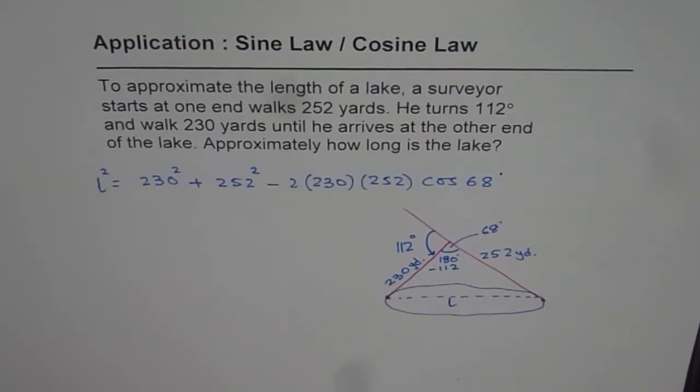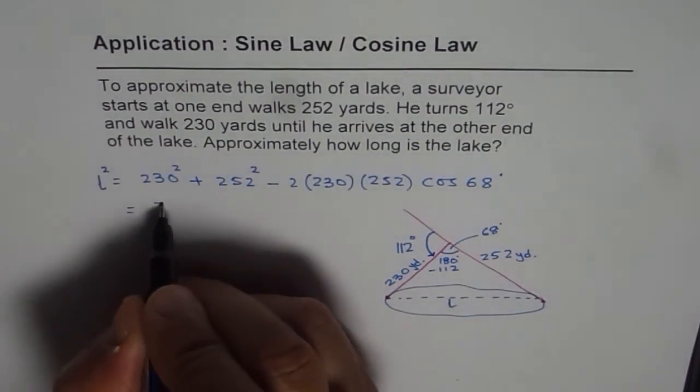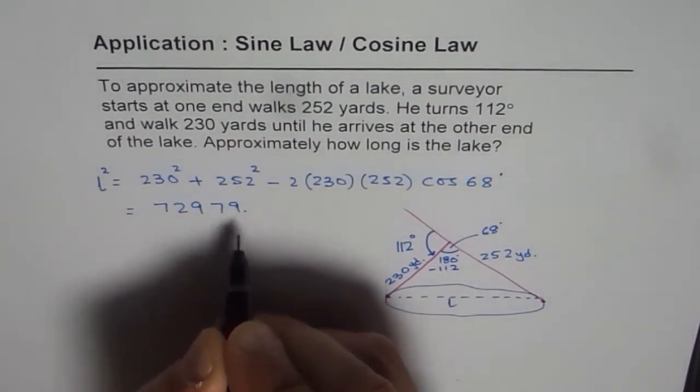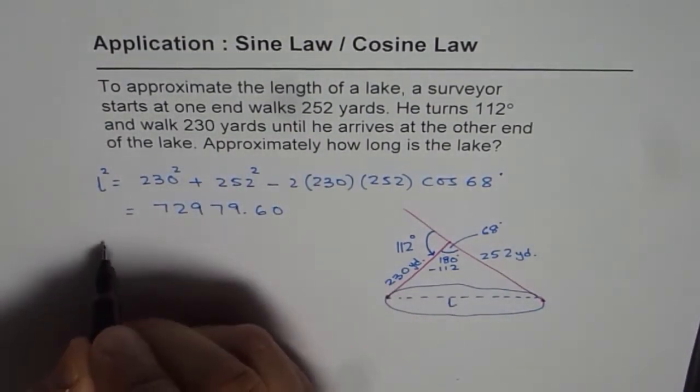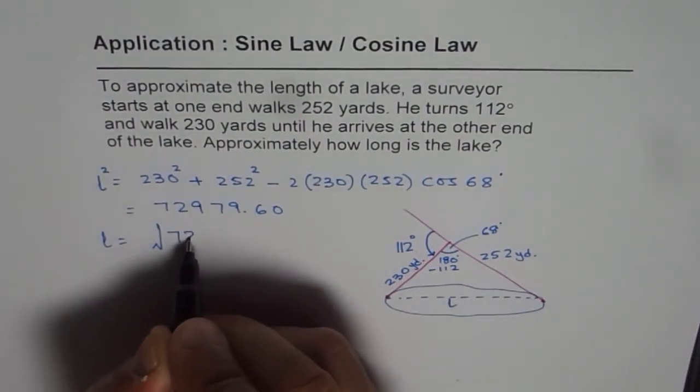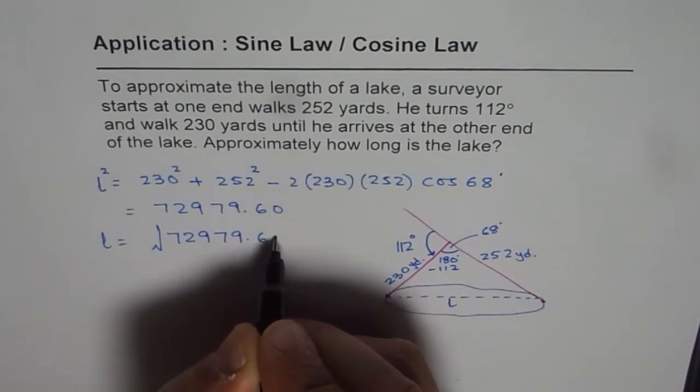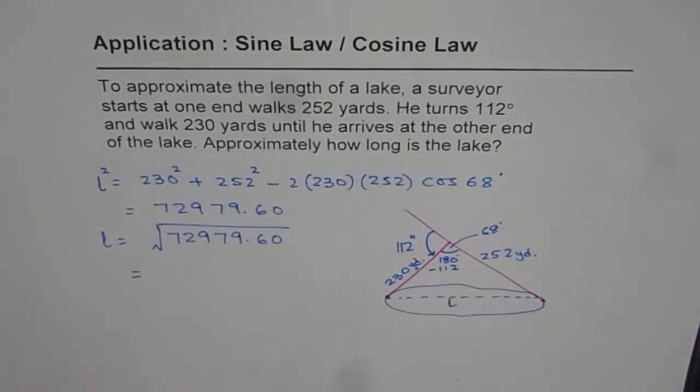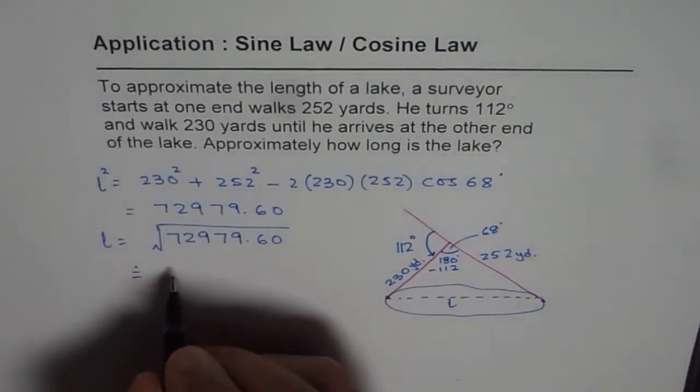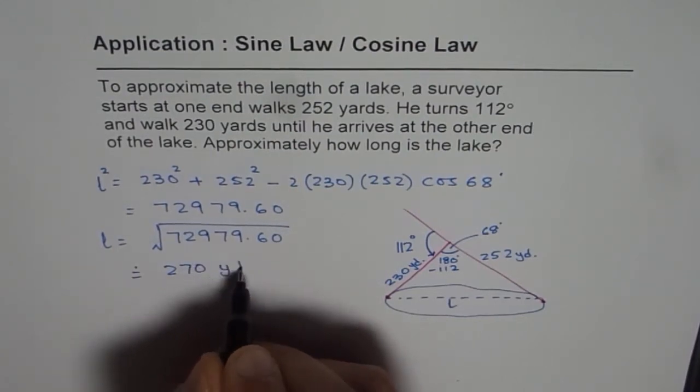So 230 squared plus 252 squared minus 2 times 230 times 252 times cos 68 degrees equals 72979.60. The length equals the square root of 72979.60, which is 270.14. We can approximate it to 270 yards.